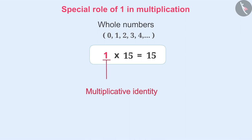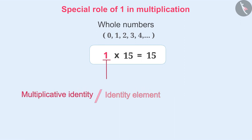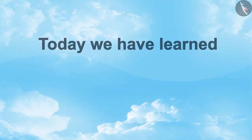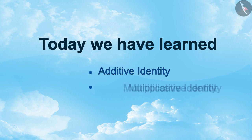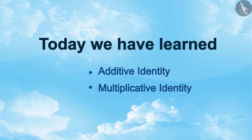1 is the multiplicative identity, also called an identity element or simply identity. Today we have learned about additive identity and multiplicative identity of whole numbers. In the next video, we will see some examples to understand this in a better way.